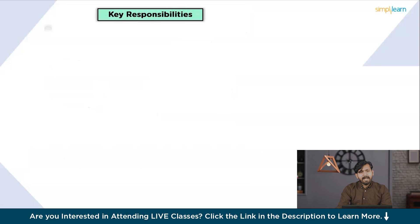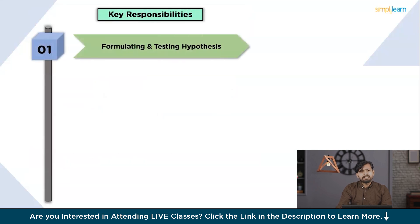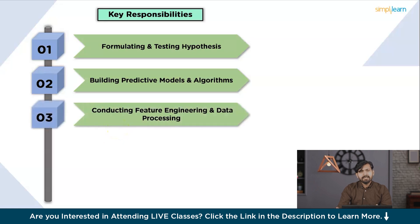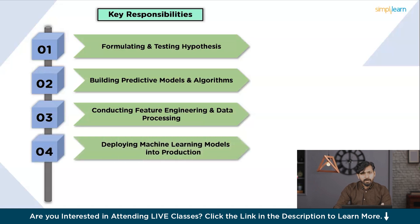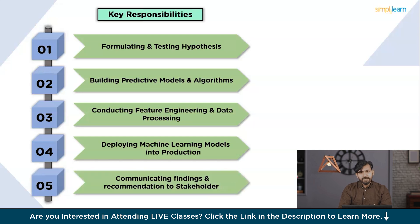Their key responsibilities include formulating and testing hypotheses. Data scientists develop hypotheses based on business questions and use statistical methods to test them using data. They build predictive models and algorithms, designing and training machine learning models to make predictions and uncover patterns in data. Next, they conduct feature engineering and data preprocessing. Data scientists preprocess and engineer features to prepare data for modeling, selecting the most relevant variables and transforming them into suitable formats. They also deploy machine learning models into production, integrating them with applications and systems to automate decision-making processes. They communicate findings and recommendations, presenting their findings to stakeholders and translating technical insights into actionable business insights.